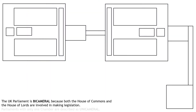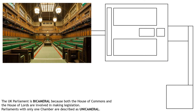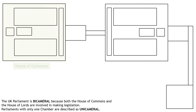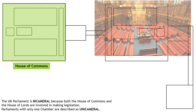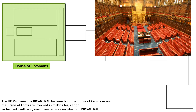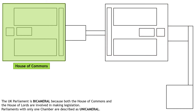Any institution where there's only one House that makes decisions is called unicameral. We have the House of Commons on the left, which is green, and the House of Lords on the right, which is red.